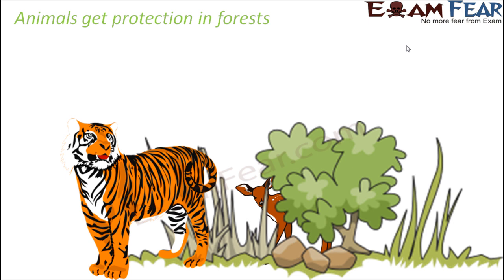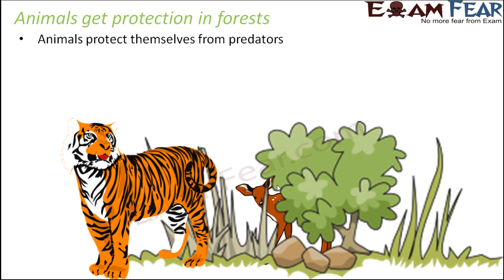On the other hand, the prey can also protect themselves from their predators. For example, a lion may be in search of a deer to eat, but due to the presence of so many bushes and trees, the deer can hide behind the trees and protect itself. So animals can protect themselves from predators in the forest because there are many options — monkeys can climb trees to protect themselves, other animals can hide behind bushes. A lot of options are available for animals to comfortably lead their lives.